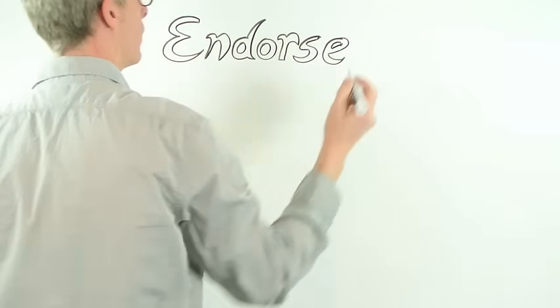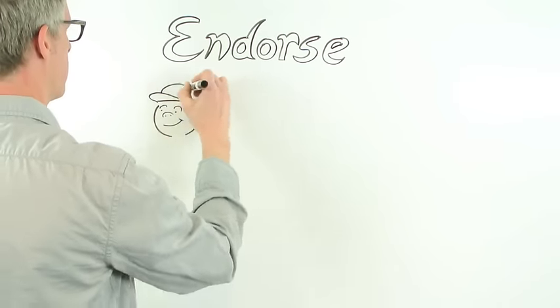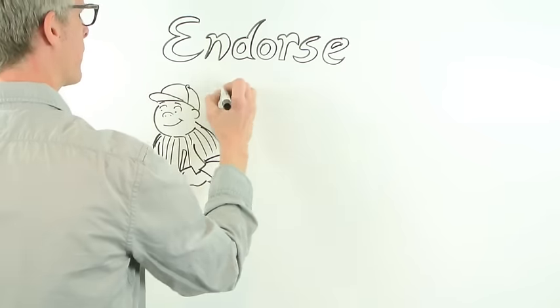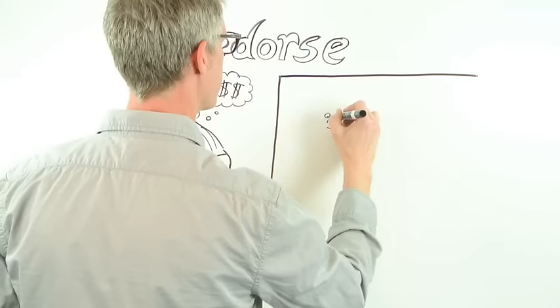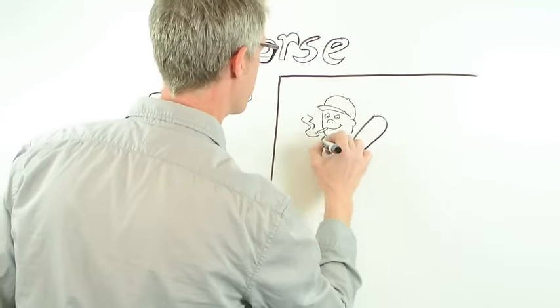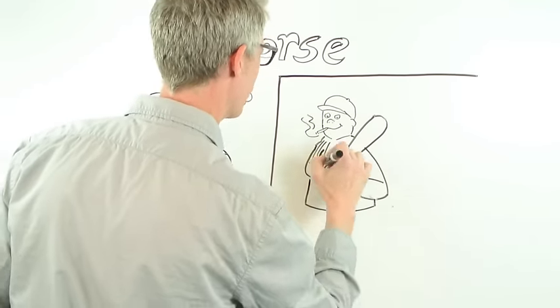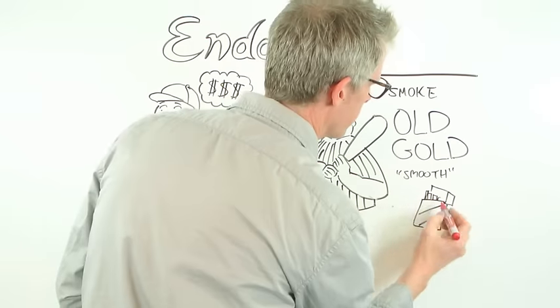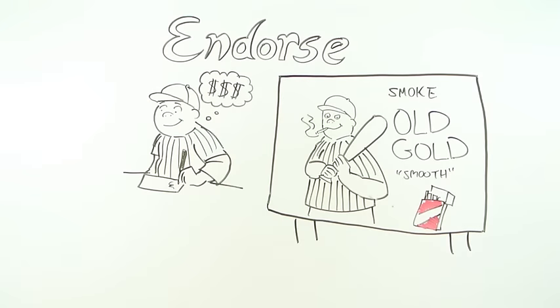Endorse goes back to Latin dorsum, or back. Endorse always meant to sign on the back, as with a check or other document. Only in the mid-19th century did it start to mean vulgarly in advertising to declare your approval of something. Sort of like how 'buy-in' started as a term for buying stocks and now can be used for a general term for agreement.